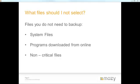What files should you not select? Files you don't need to backup: things like system files, programs you download from online, and non-critical files. For example, if you download Google Chrome or Firefox, there's no need to back up those executables — it's faster to download them directly from the company's website. System files are the same; even if you do restore them, they are not usable again. You're using up your quota for files that can't be properly restored, because this is file and folder backup, not a system snapshot of your machine.